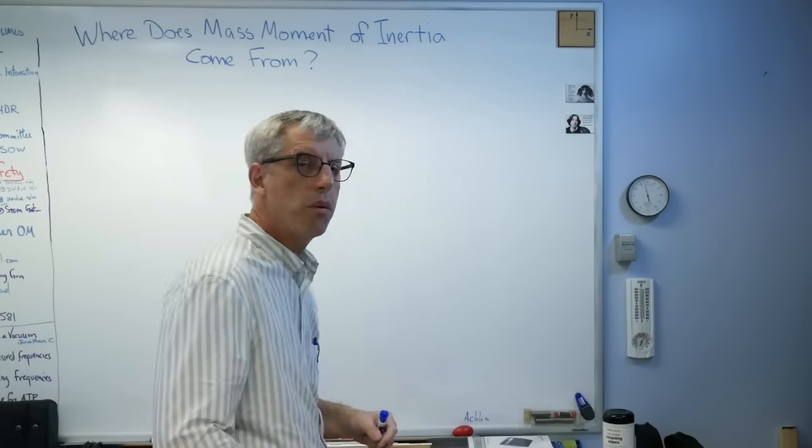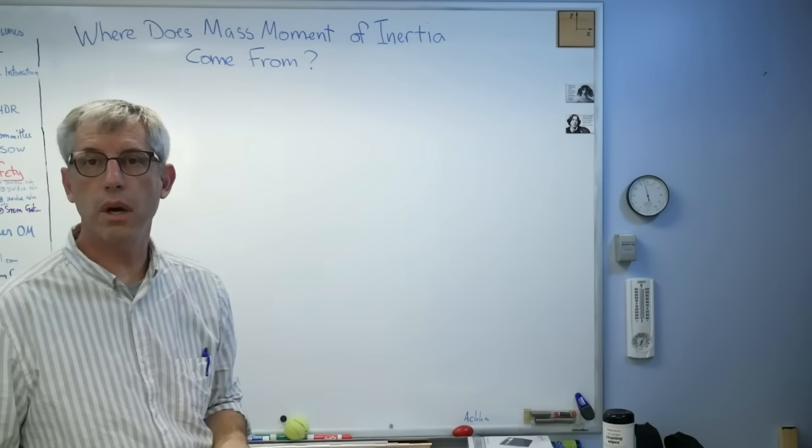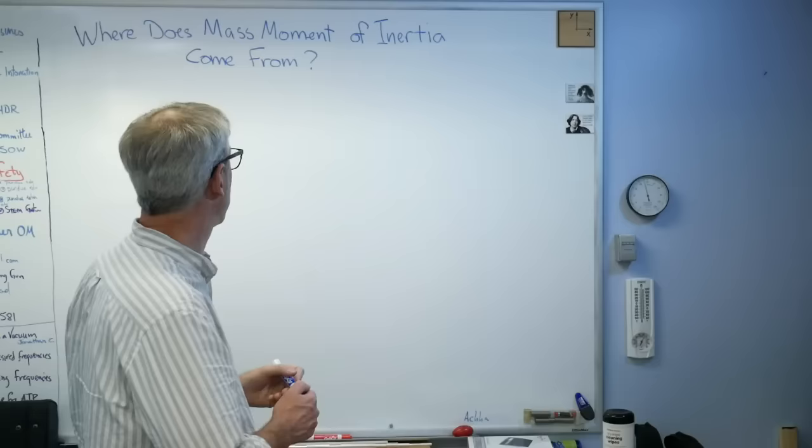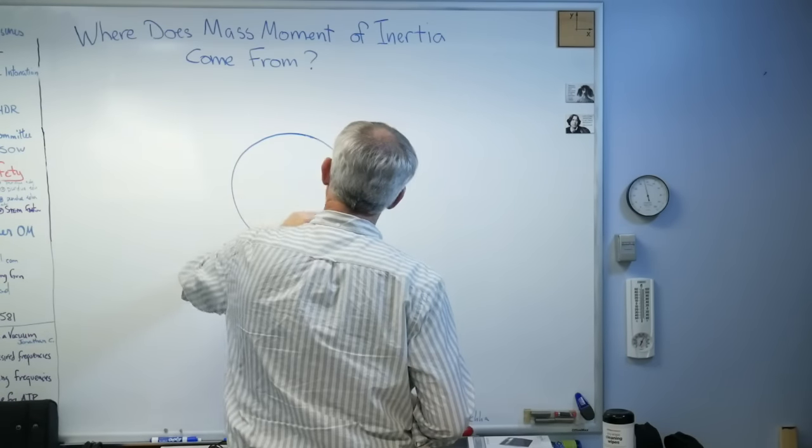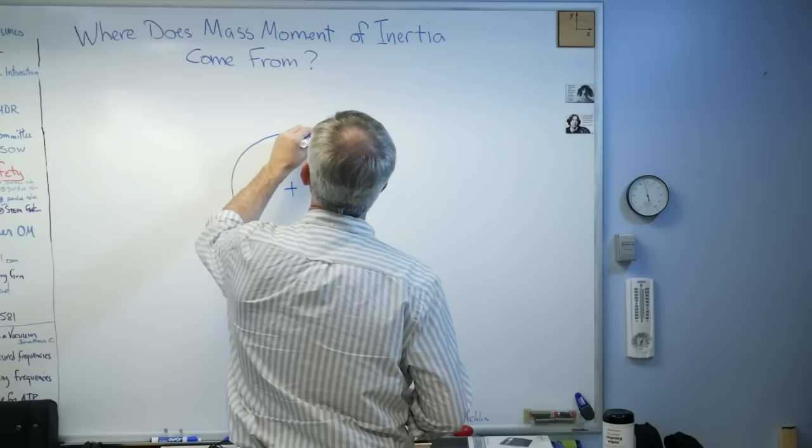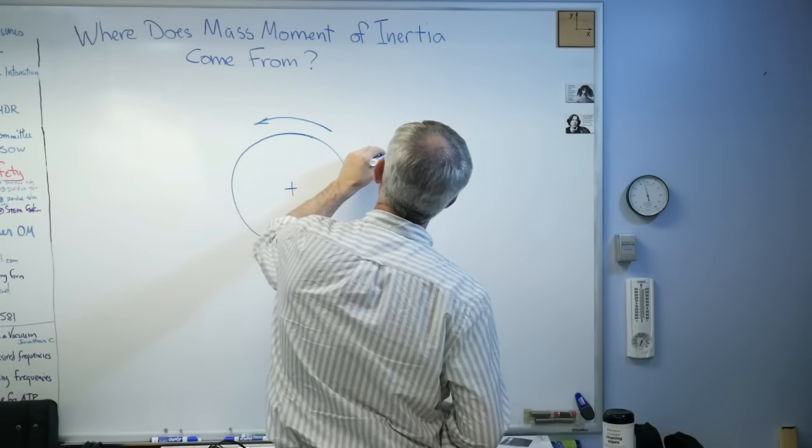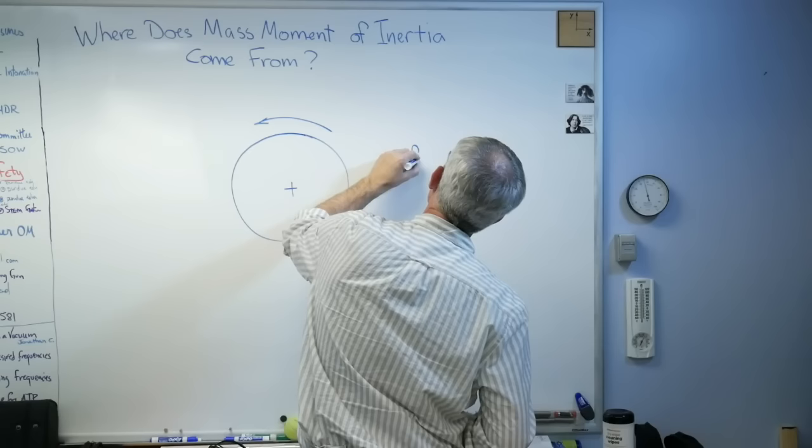Let's say I want to know the mass moment of inertia of a disc. Look at it from the top. Here's a disc, and I'll make this as circular as I can. There's the disc, and I'll call it a uniform disc.